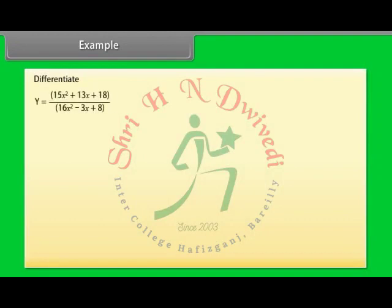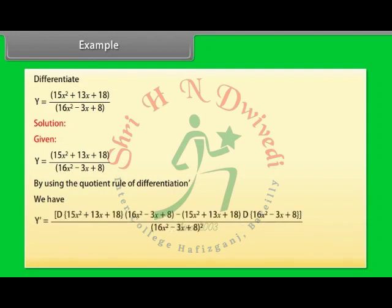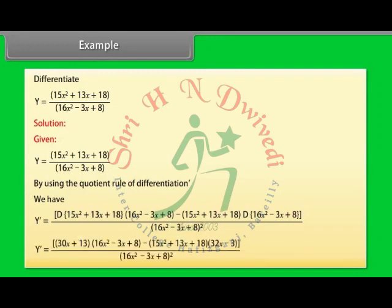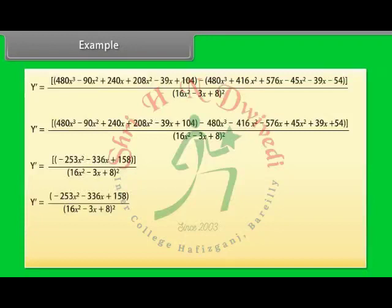Differentiate y = (15x² + 13x + 18) / (16x² − 3x + 8). By using the quotient rule of differentiation, we have y′ = [d/dx(15x² + 13x + 18)·(16x² − 3x + 8) − (15x² + 13x + 18)·d/dx(16x² − 3x + 8)] / (16x² − 3x + 8)². By further calculating, we get y′ = (−253x² − 336x + 158) / (16x² − 3x + 8)².